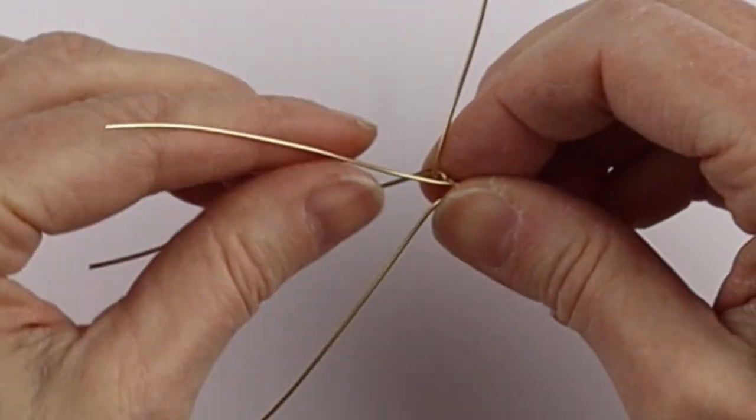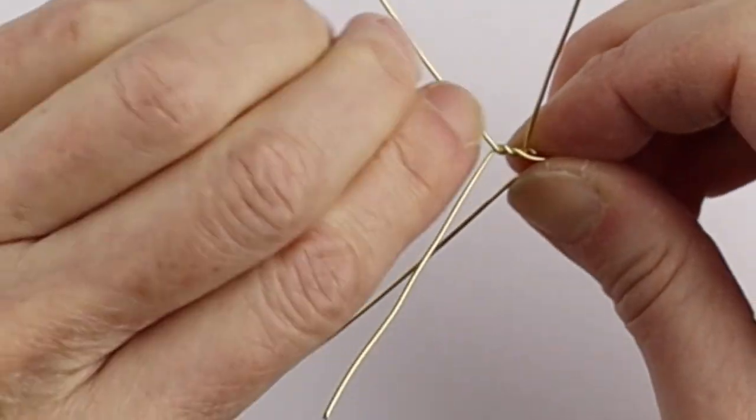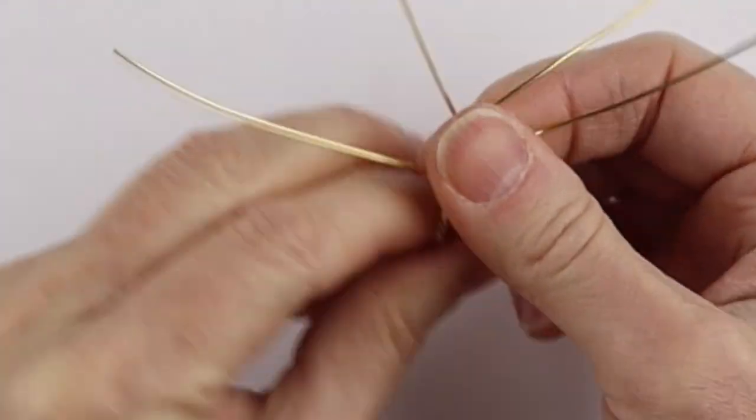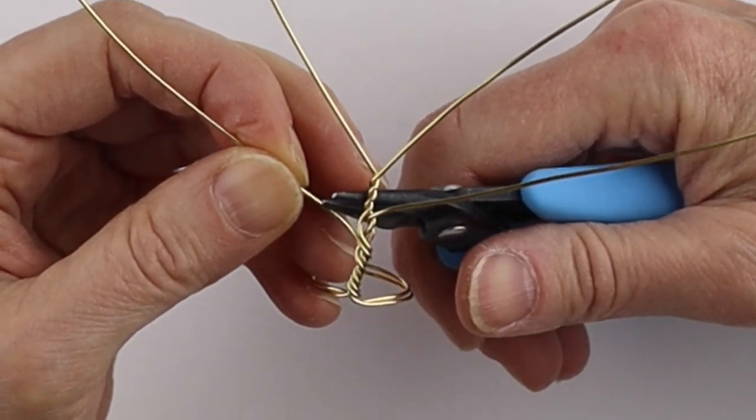And then these two, I'm just going to twist them a few times. So one, two, three. So we have the branches going out at different levels. And then we're just going to do very simple little twists here. So we're just going to take this one and just bring it around.